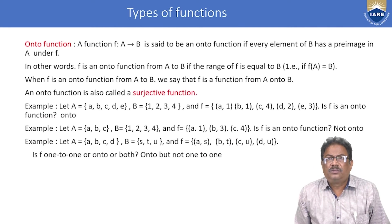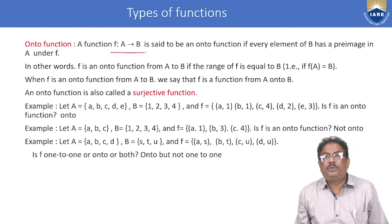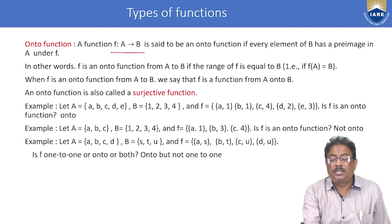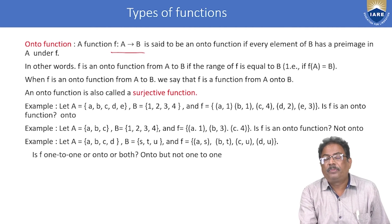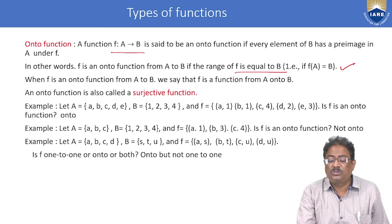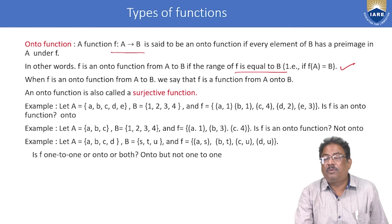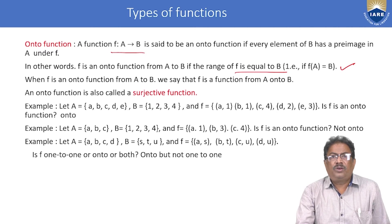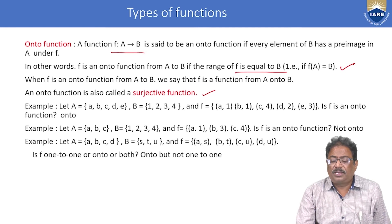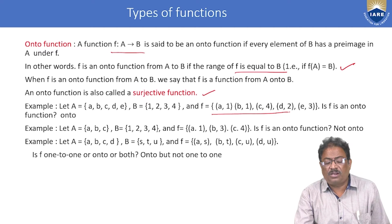Onto function (surjective): A function f from A to B is said to be onto if each and every element of B has a preimage under f. In this case, the range of f equals B — that is, f(A) = B. An onto function is also called a surjective function.